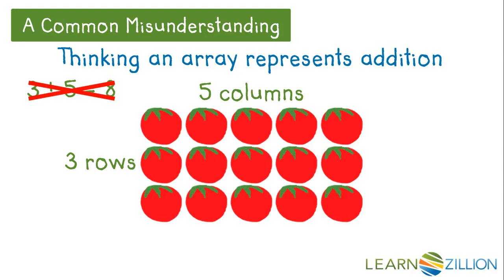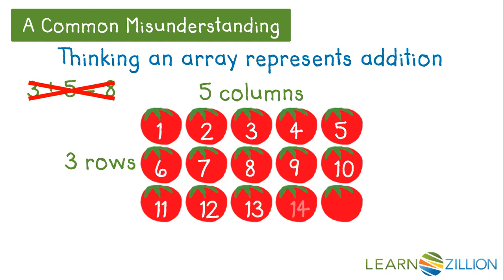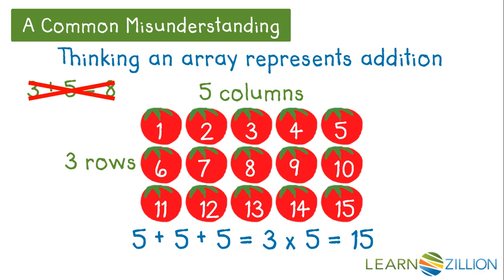There are a lot more than eight tomatoes in this array. In an array, we can add equal groups or multiply rows times columns. So to show the fifteen tomatoes in the array, we could add the groups of five: five plus five plus five. Or multiply three times five to show that there are fifteen tomatoes in this array.